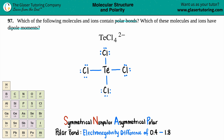Tellurium had six electrons to begin with. It's gaining two because the charge is minus two, so that gives us eight electrons total. Now I can put brackets around this and label it two minus.